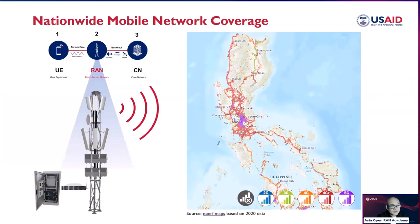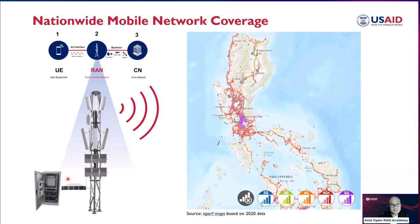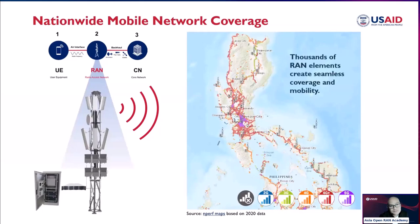We need to put different radio access networks in different places because the output power of cell sites is typically 20 watts, 40 watts, or 80 watts in some cases. That's why coverage is very limited compared to a broadcast station. Tower heights may reach 50 to 60 meters, unlike broadcast stations at around 100 meters transmitting at higher power. Thousands of radio access elements create seamless coverage and mobility.